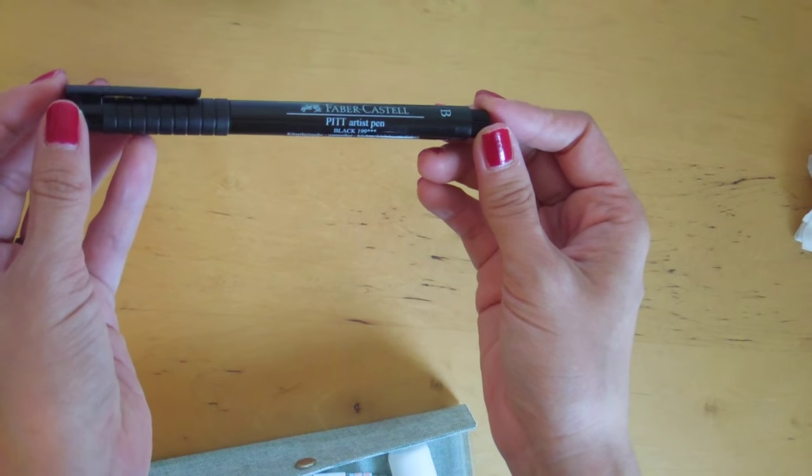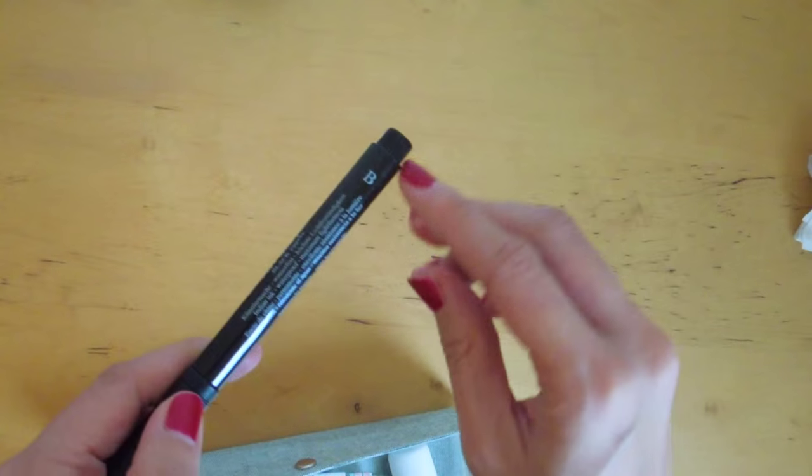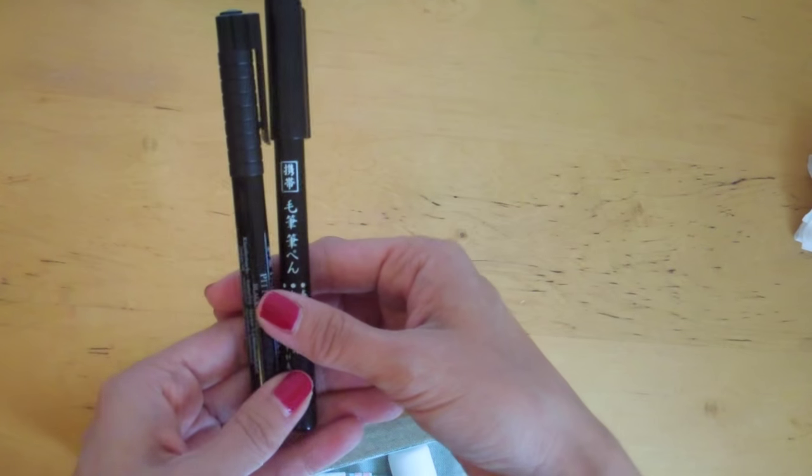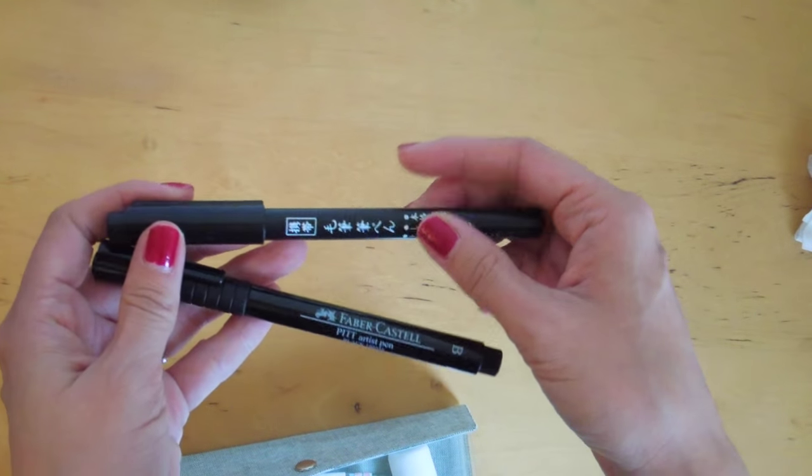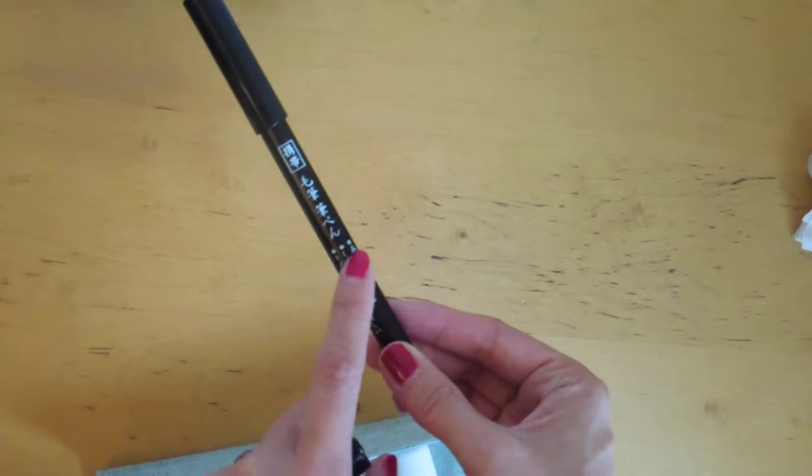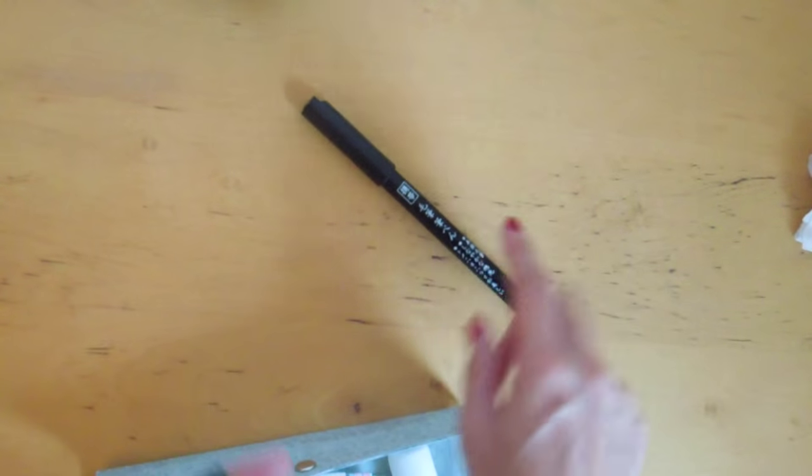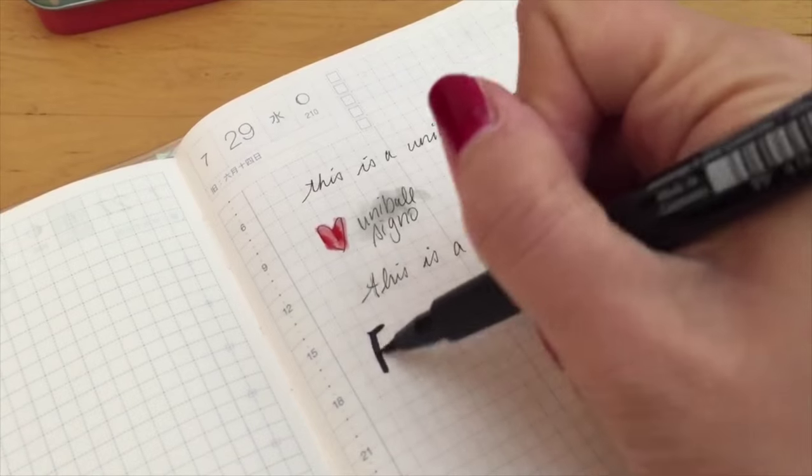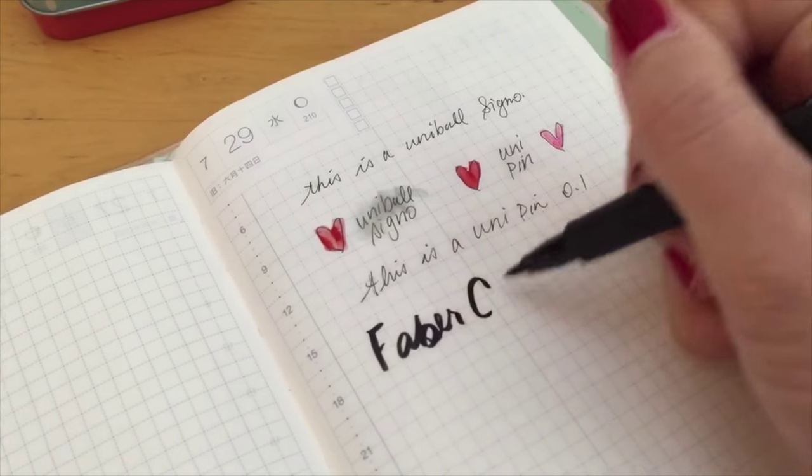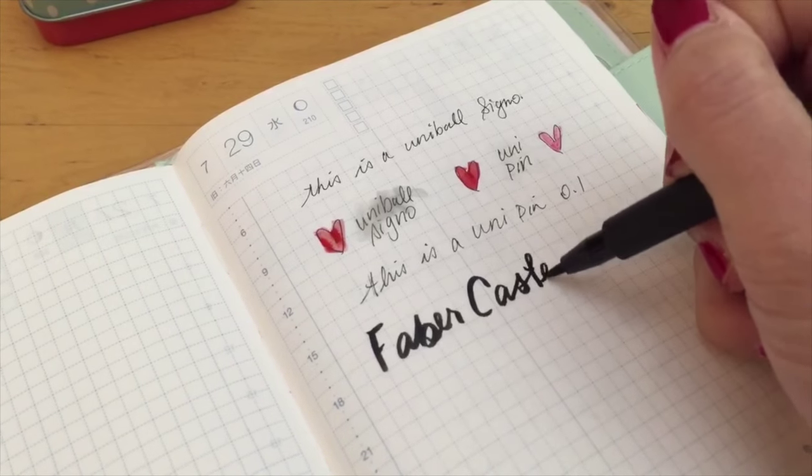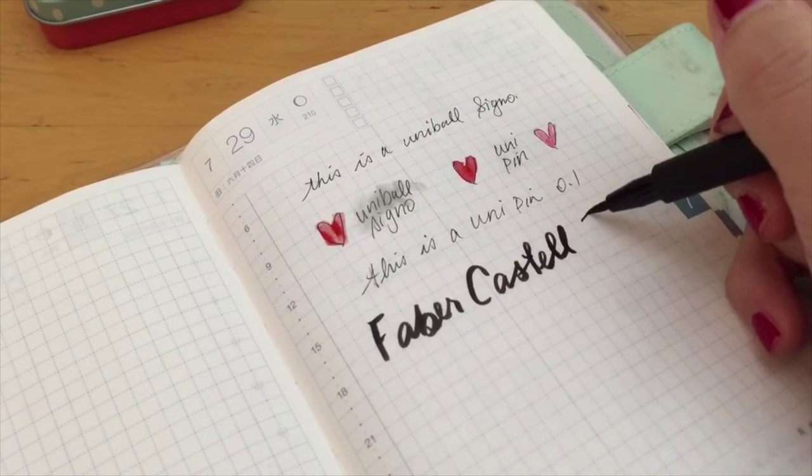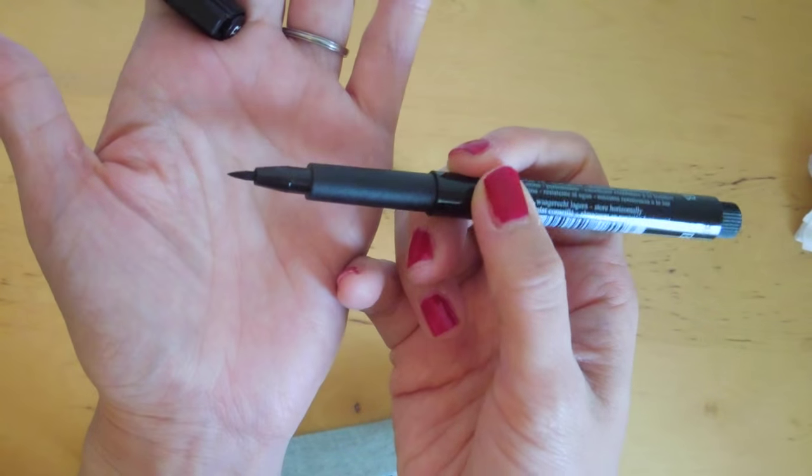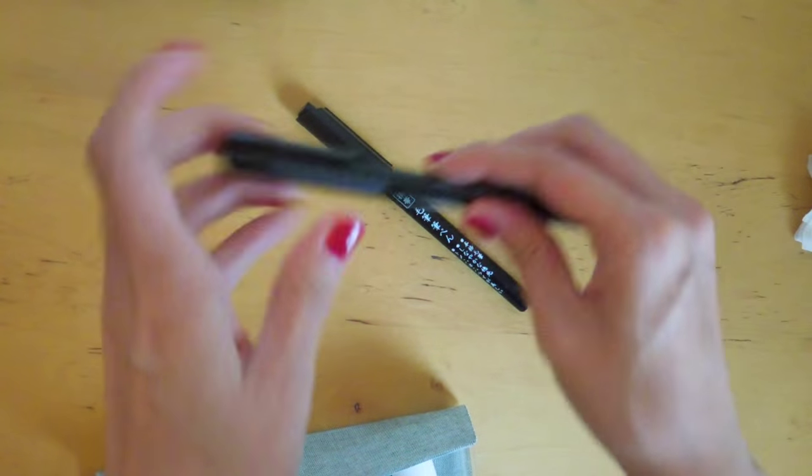And then this one is the Faber-Castell Pitt Artist Pen in Black. This is in the brush style. I received this from Maria Payless Blue and I love it. I kind of view this Pitt Artist Pen as a way better version of the Daiso brush pen, which I still love as well. But I find that if you push too hard with the Daiso brush pen it gets streaky. The ink here with this brush pen is really dark and rich, and the ink flows nicely when you're on a down stroke. Even if you push hard, the ink flows nicely. So I'm loving this brush pen.